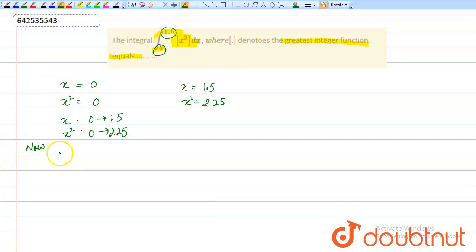Now we will break this into different intervals. The integral from 0 to 1.5 of [x²]dx can be broken into separate intervals based on where the greatest integer function value changes.